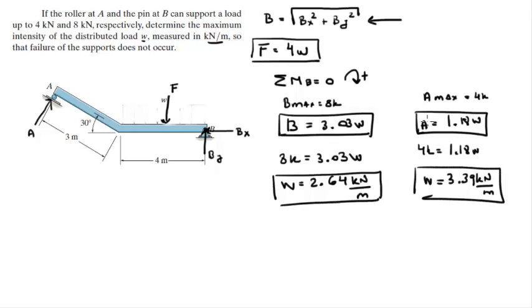So when you have two restrictions like this you got to pick the lowest one. So final answer and this one does not work. Why not? Because if W is 2.64 kN per meter that will put the B at its limit. Anything higher would break it at B. And as you can see if you put it at 3.39 it would break at B. So final answer.